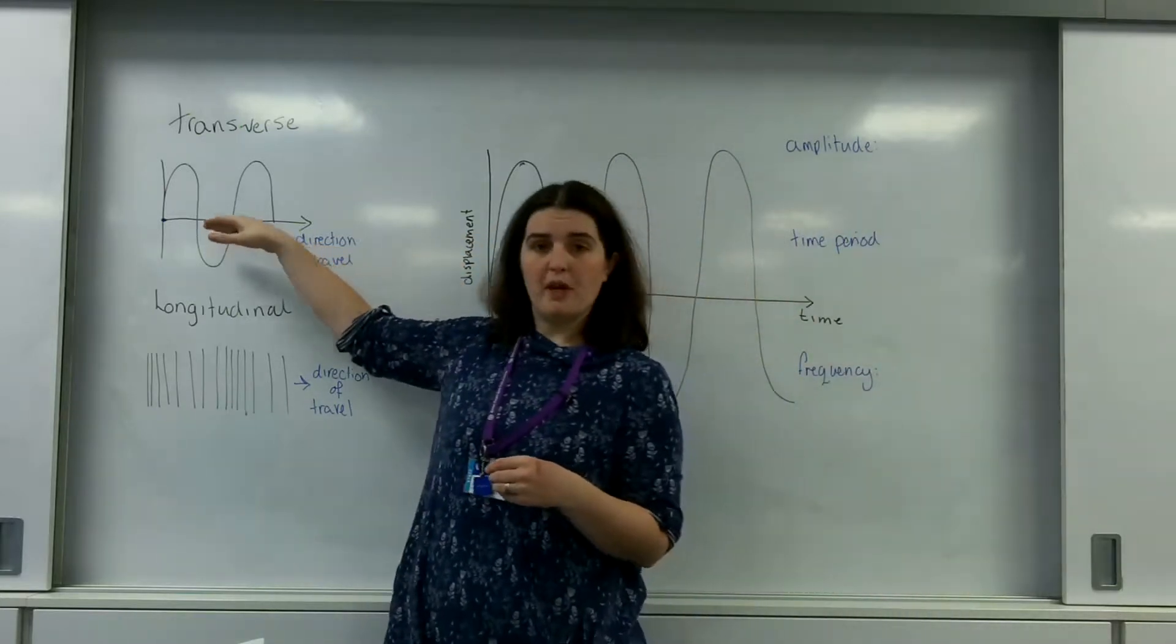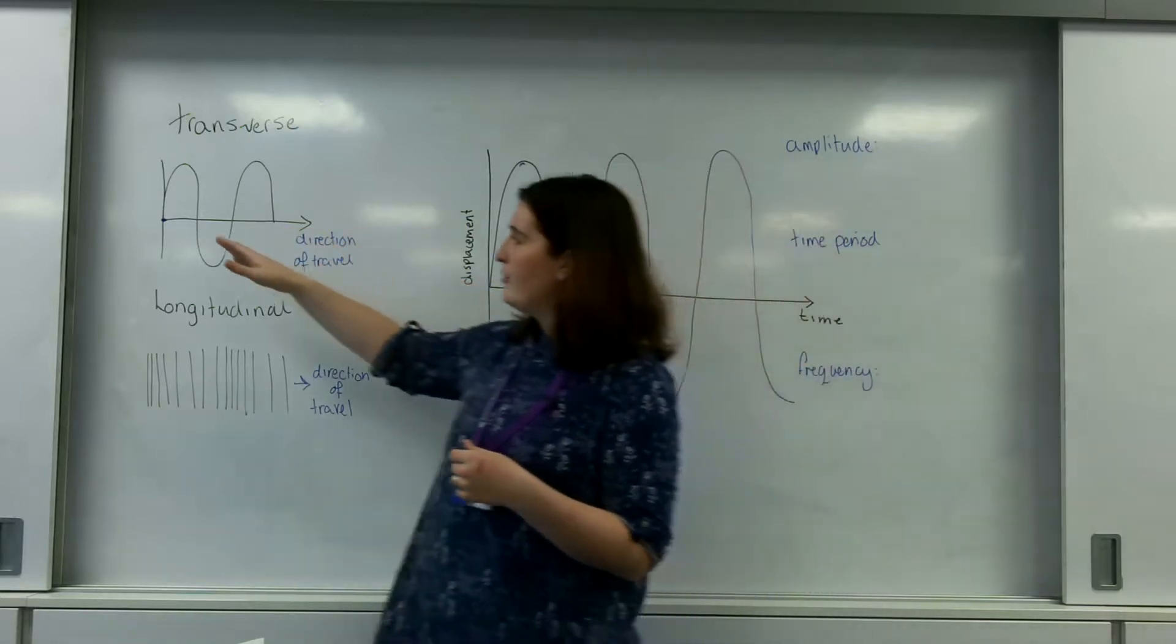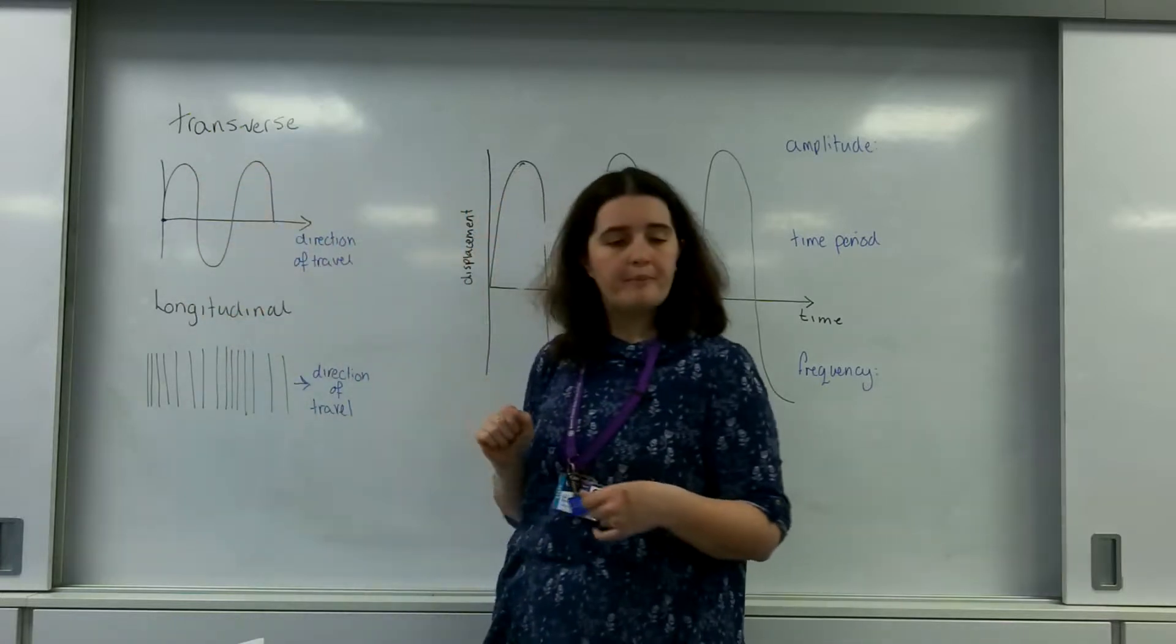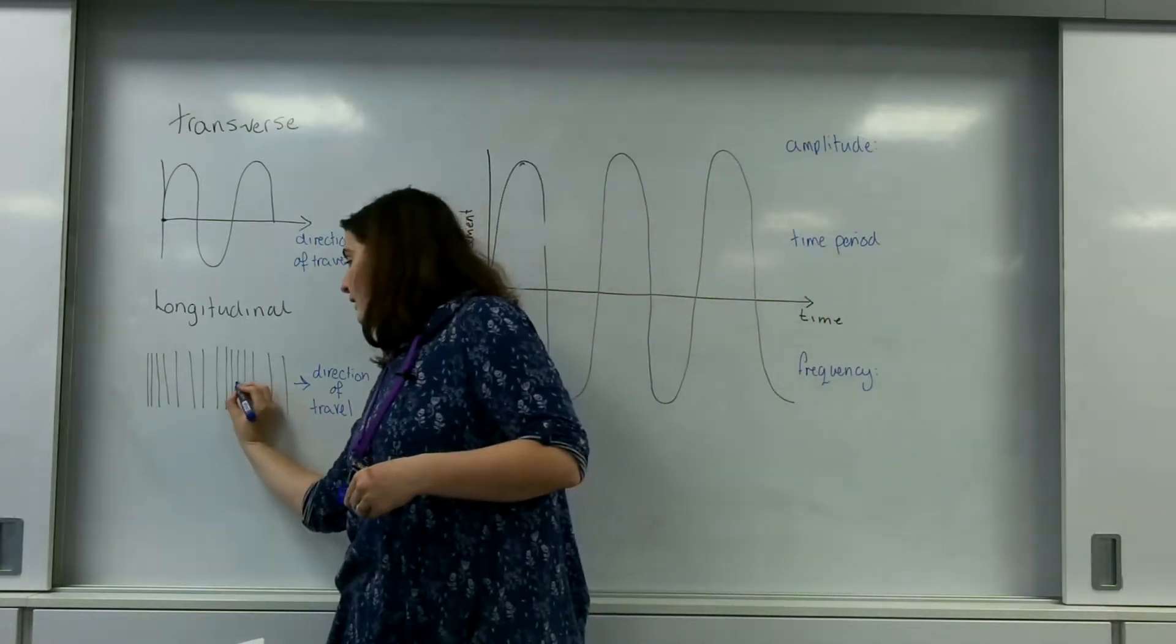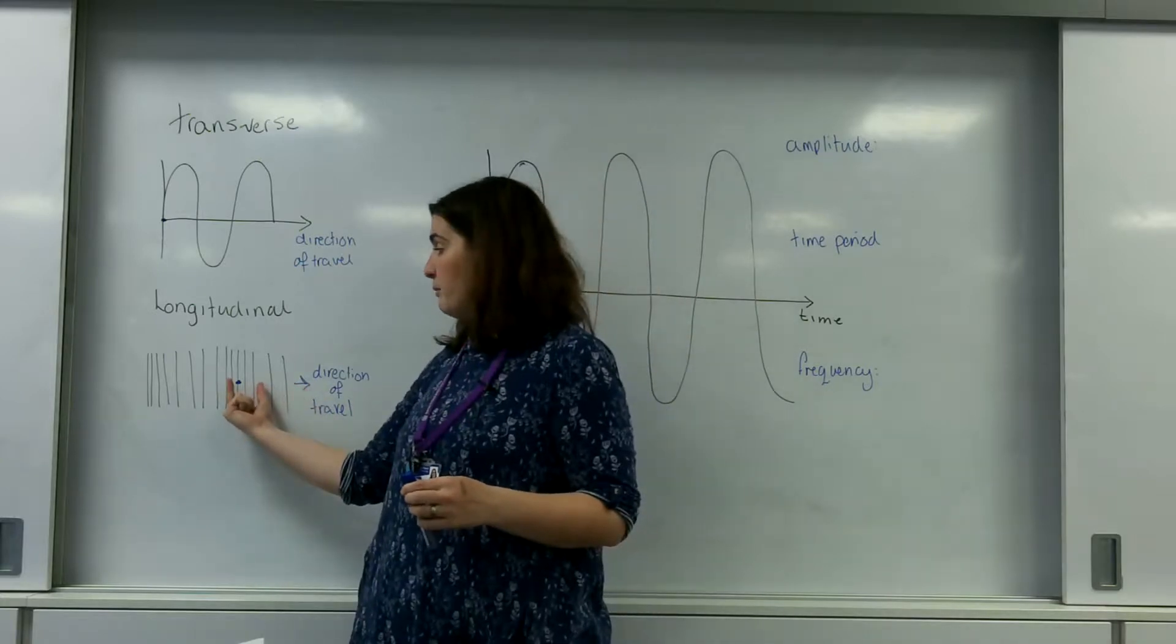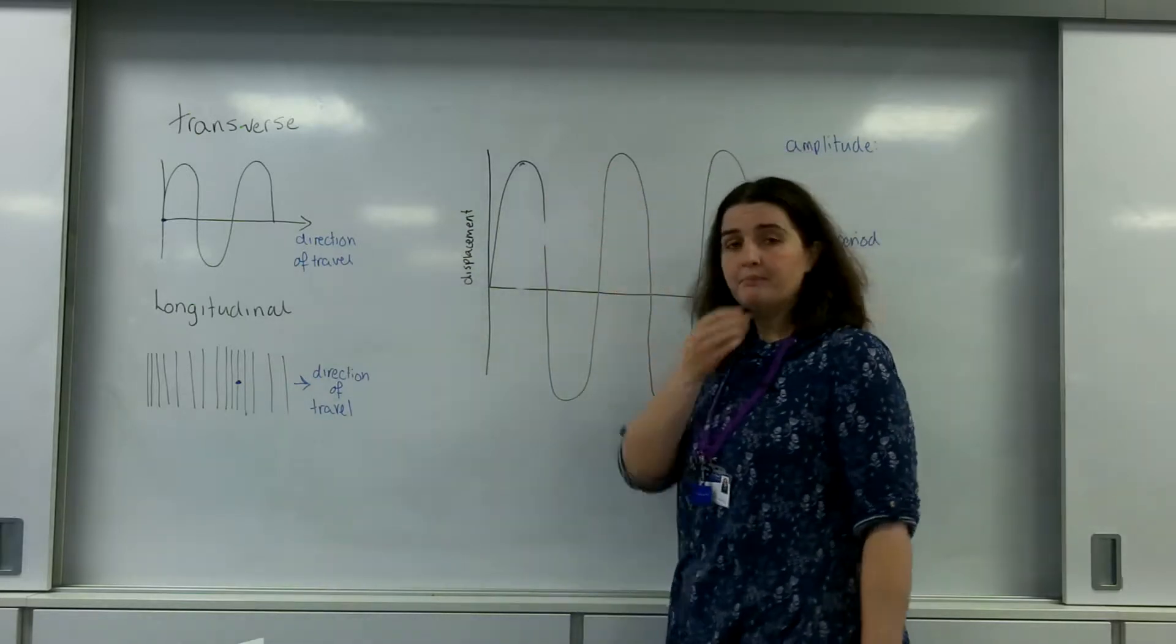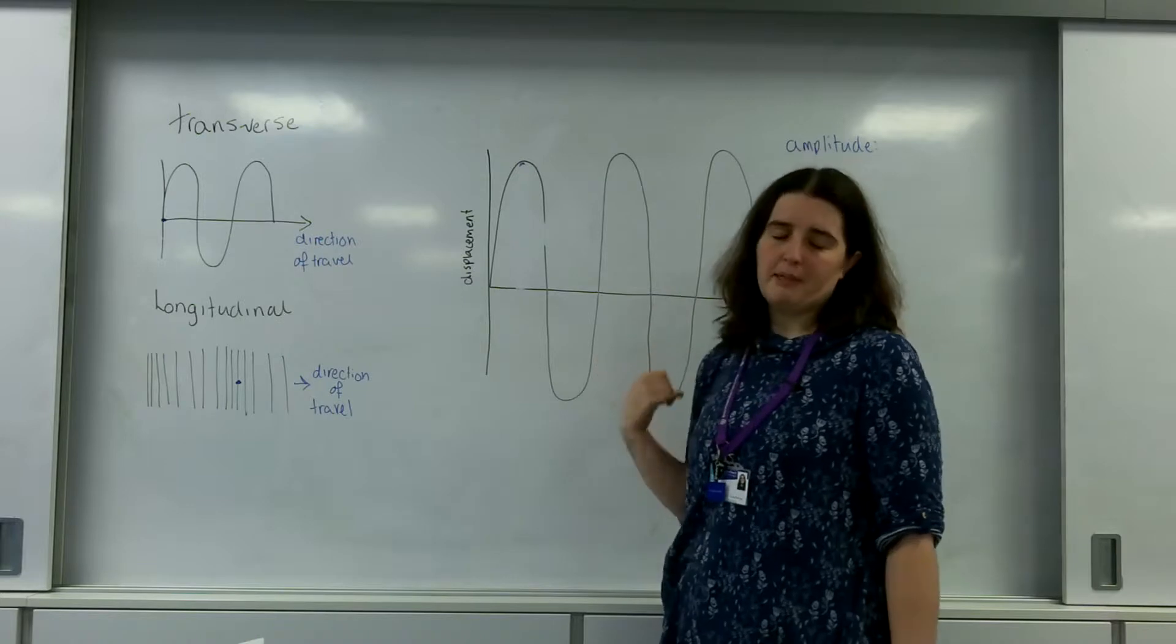Now this, if you look at a transverse wave it's pretty obvious how this can translate to this. As the wave moves through, the particles displacement be positive and negative, it'll go positive and negative. With a longitudinal wave it's a little harder to see. My particle as the wave goes through is going to be moving closer together than further apart. And again I can plot this displacement on a displacement time graph.